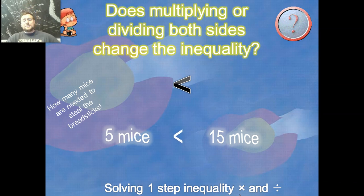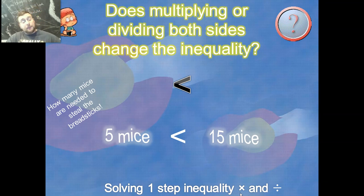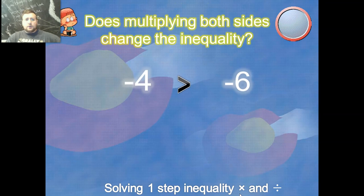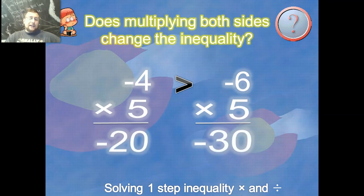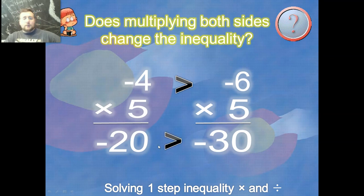Fifteen is bigger than five — looks like the sign stays in the same orientation because we multiplied both sides by the same thing. It seems like the same pattern is holding true. For example, negative four and negative six: if I multiply both sides by five, I get negative 20 on the left and negative 30 on the right. Negative six was smaller than negative four, and negative 30 is smaller than 20 — the sign stays in the same orientation.